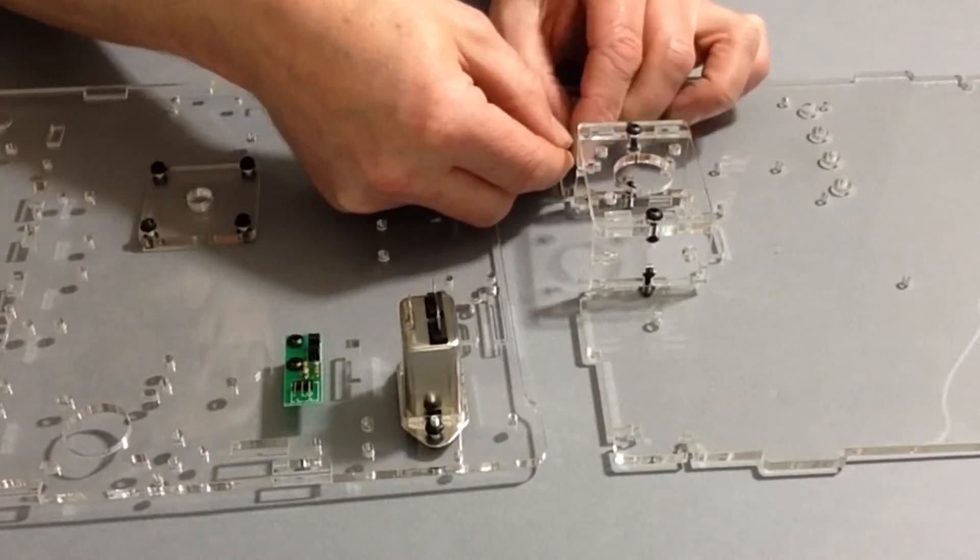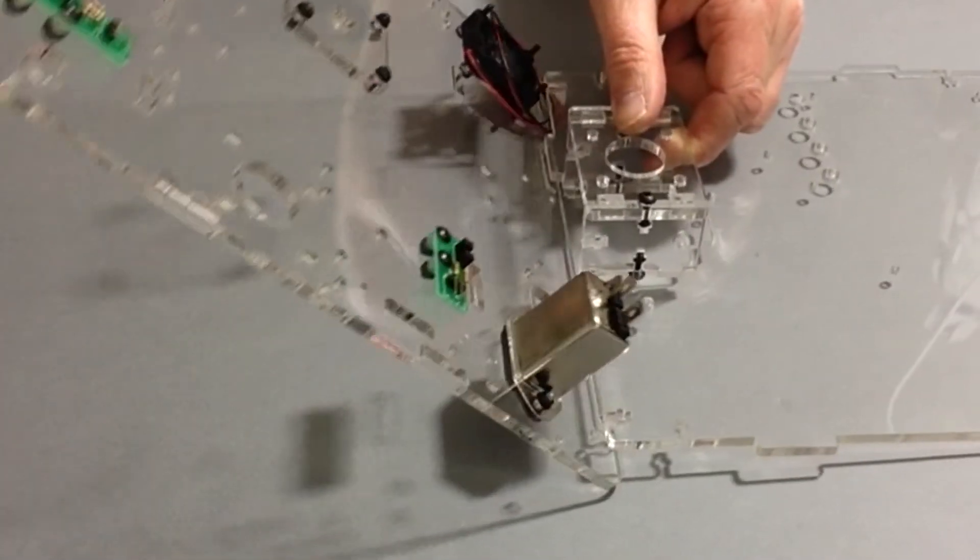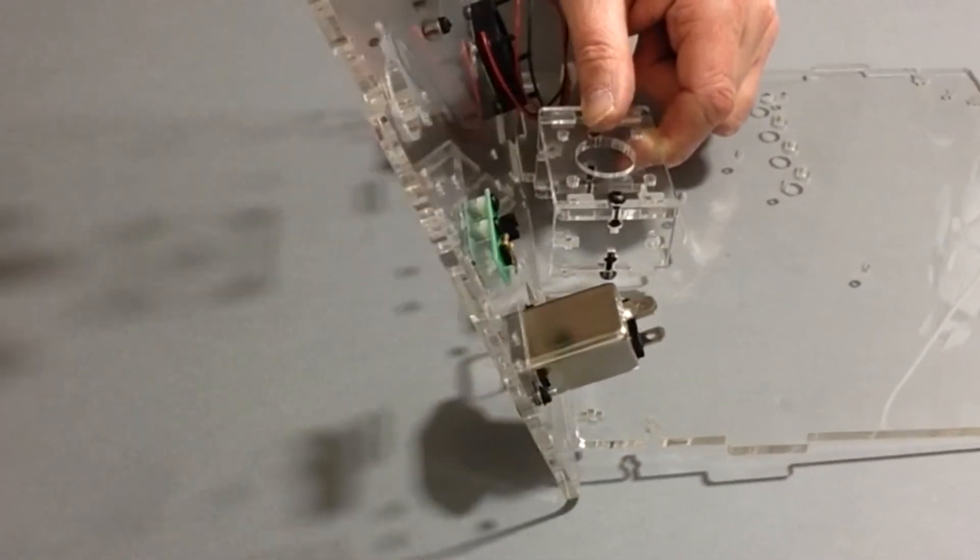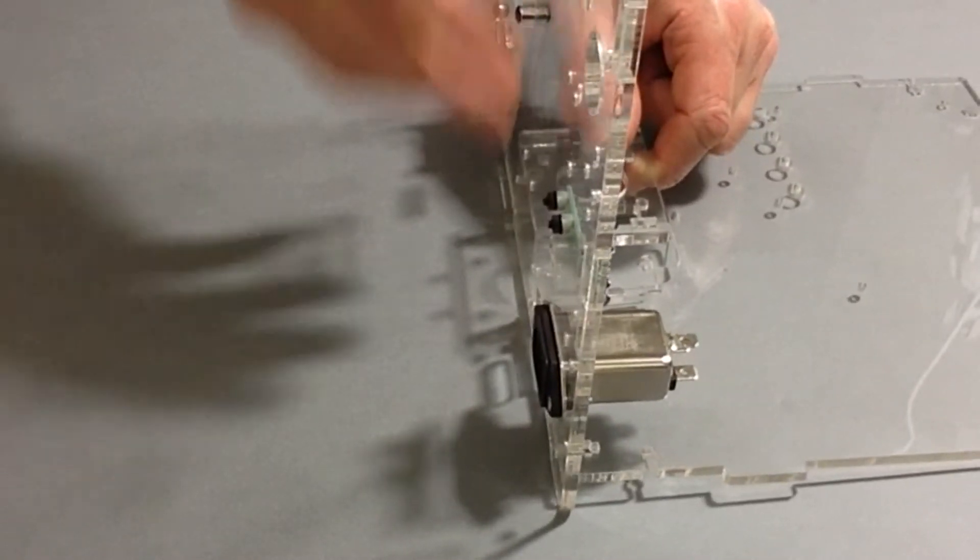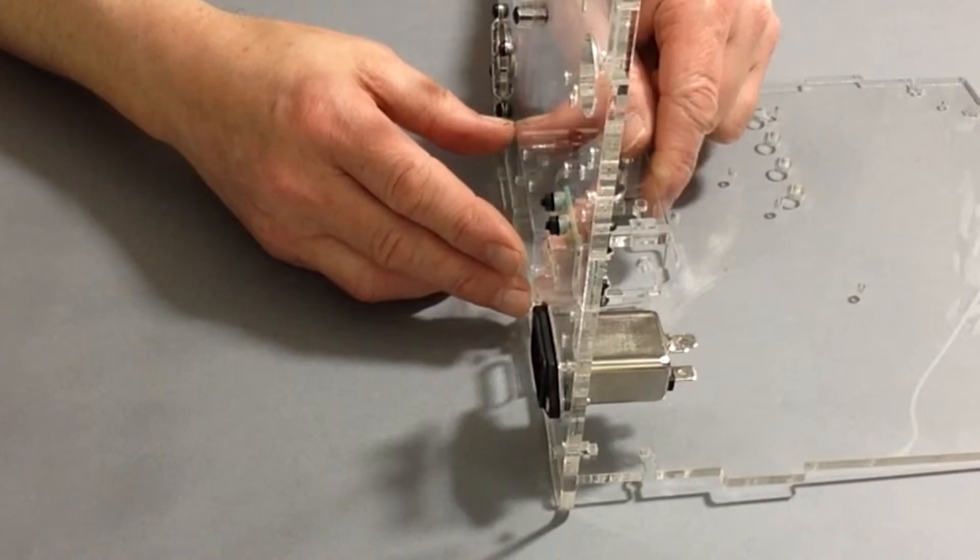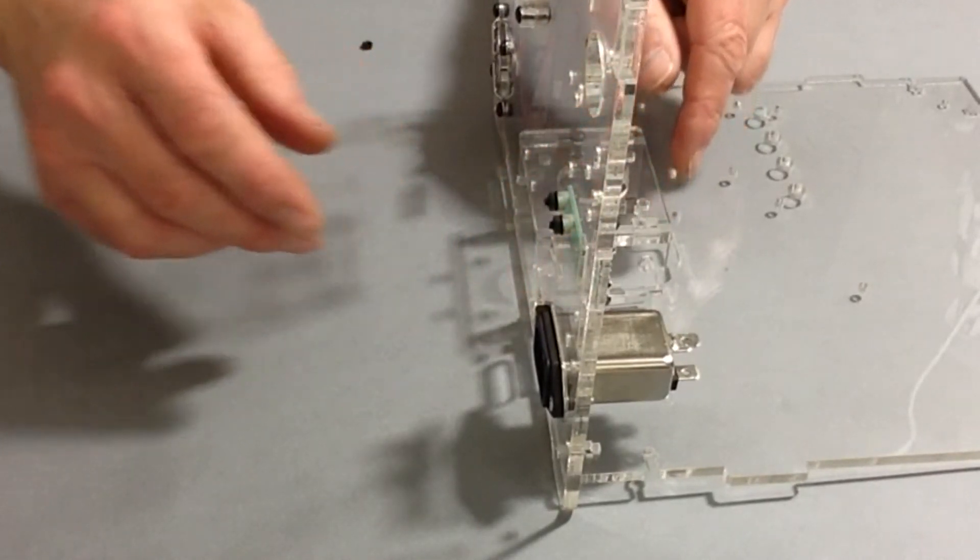Place the back panel into position, then place two of the truss screws into the sides, securing that into place.